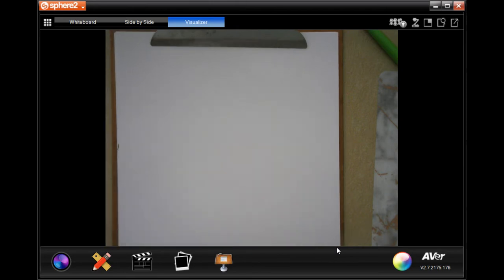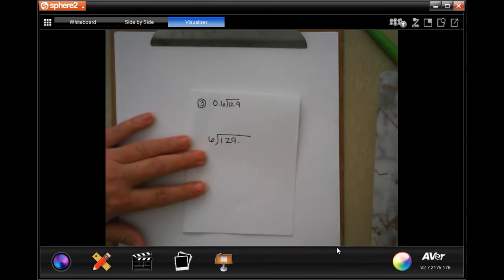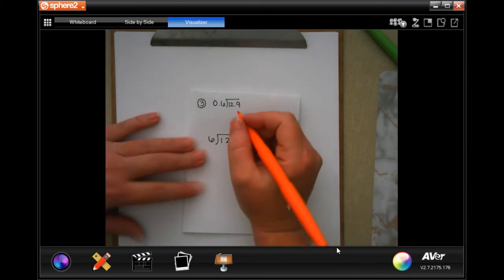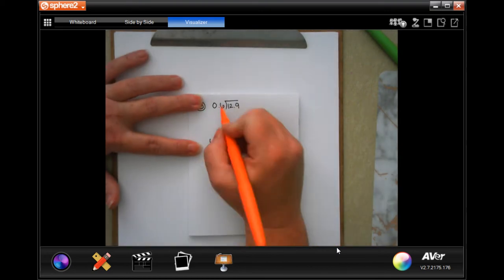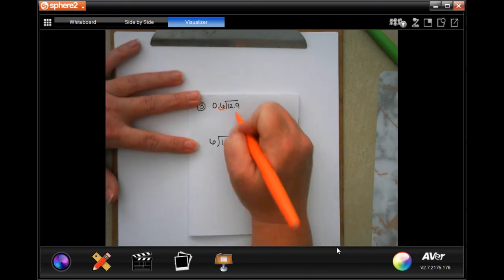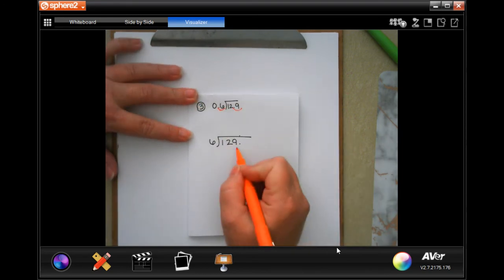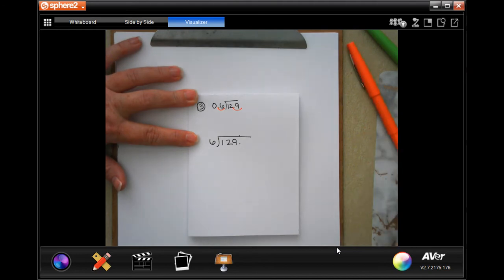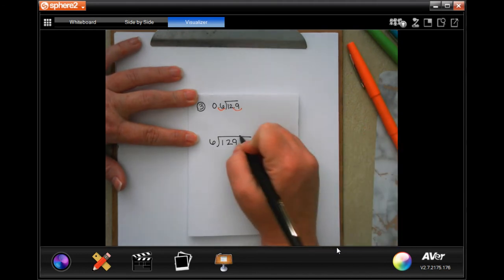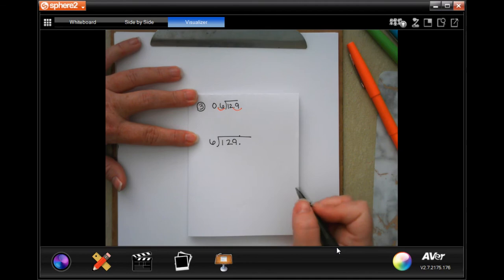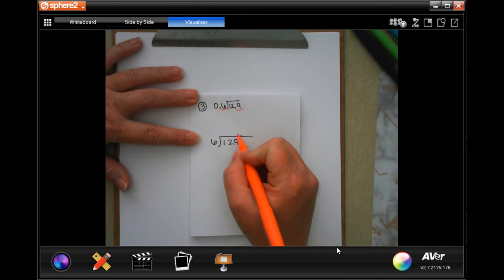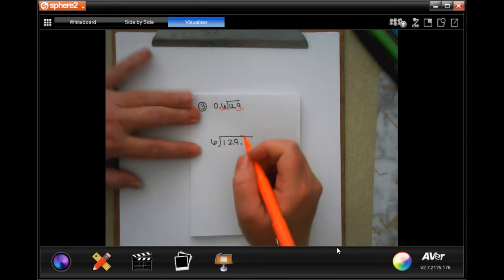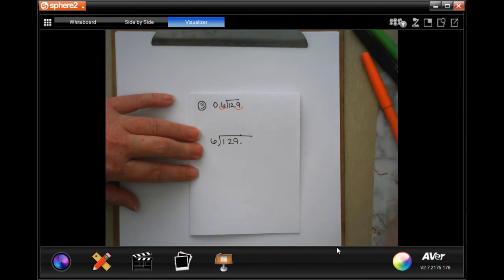I am actually going to start on number three, because number two is going to be pretty easy for y'all once you guys get this. On number three, you'll notice that I had to move the decimal one time. So I moved it one time, and then I rewrote it right here. Now, I did go ahead and put my decimal in, because I don't know if I'm going to have to add a zero or not.